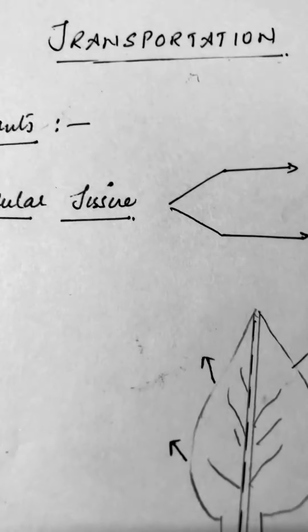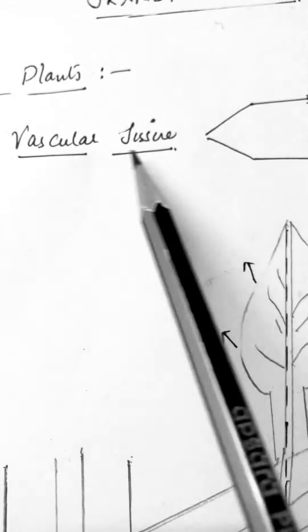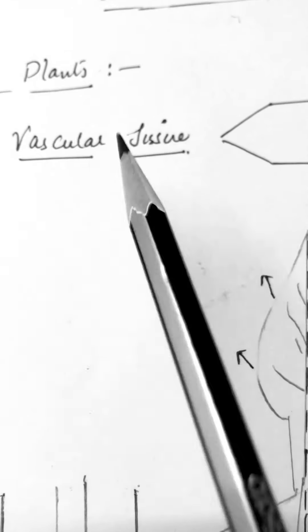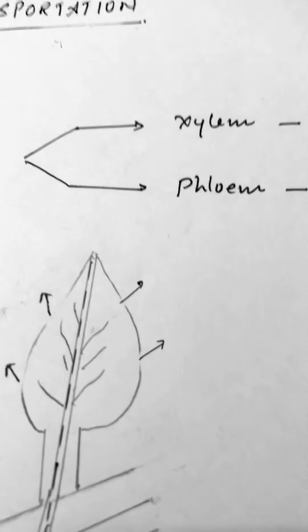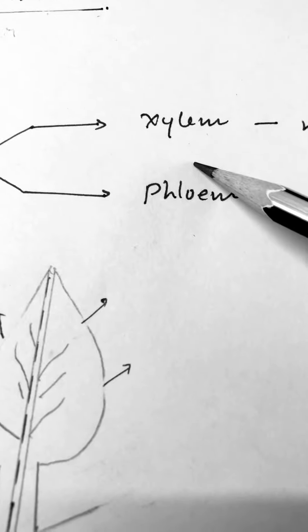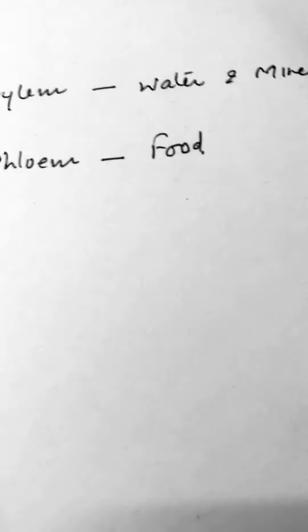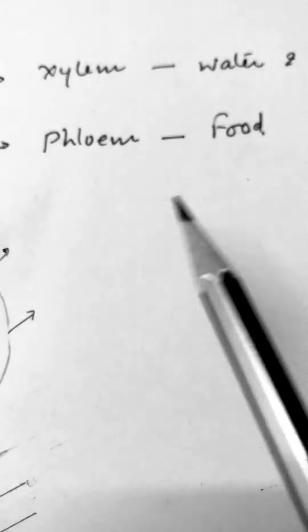So for transportation in plants, we have a specific tissue known as the vascular tissue. We may also call it vascular bundle. There are two components of the vascular tissue, the xylem and the phloem. The xylem transports water and minerals and phloem transports food.